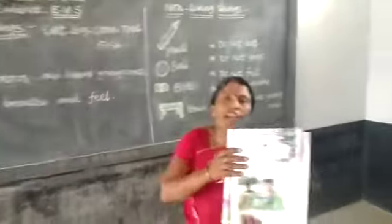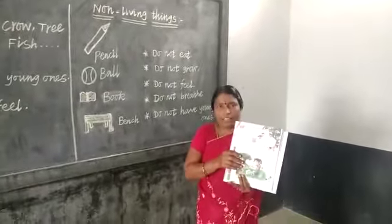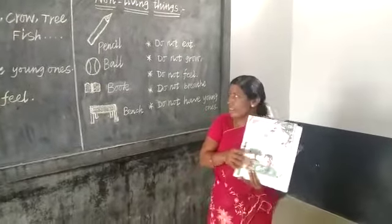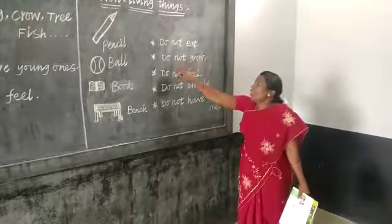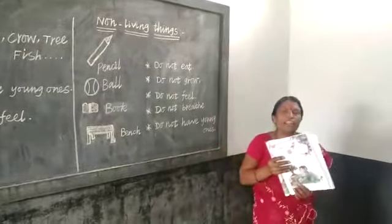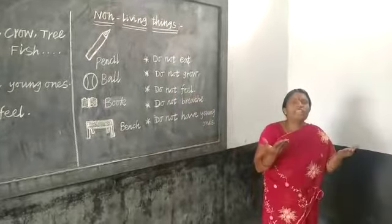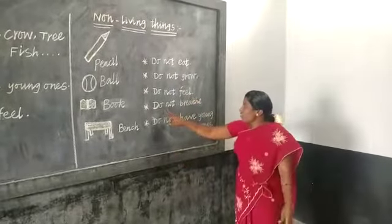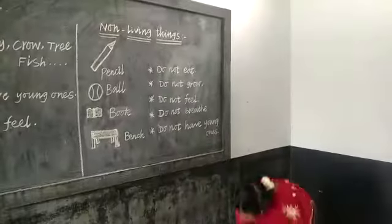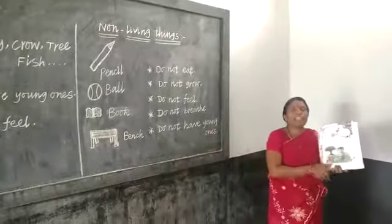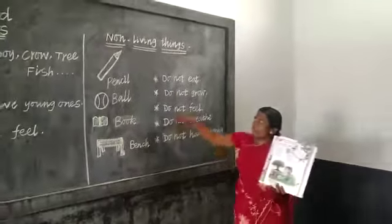If you want to move, you want to move and grow — non-living things cannot do that. So what if you do not feel? Non-living things do not eat, do not grow, do not feel, do not breathe, and do not have any points of life. These are non-living things.